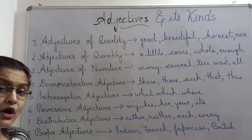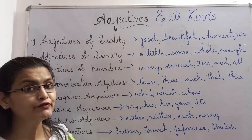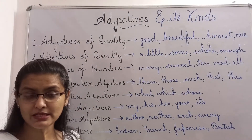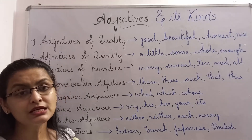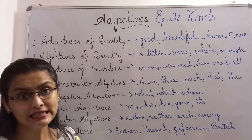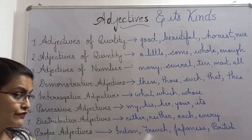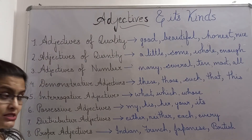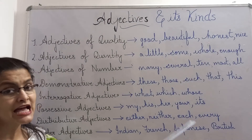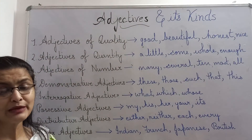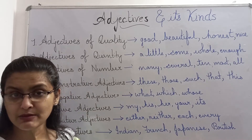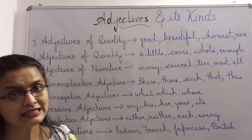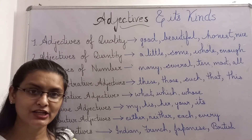Proper adjectives have been derived from proper nouns, and they can be used for certain specific persons, places, or maybe some particular animal or thing. For example: Indian, French, Japanese, and British. Indian goods, French perfumes, Japanese cars, and British goods. They can be used for specific persons, languages, places, or things, and hence they are called proper adjectives.